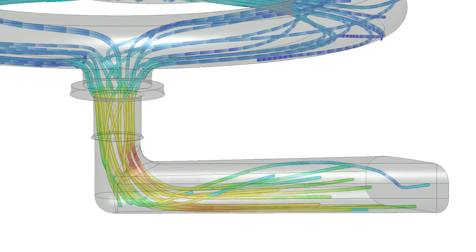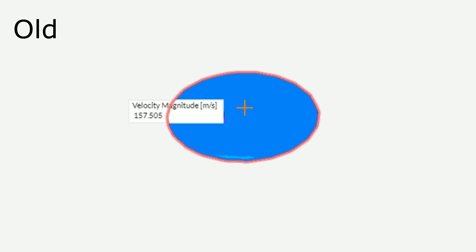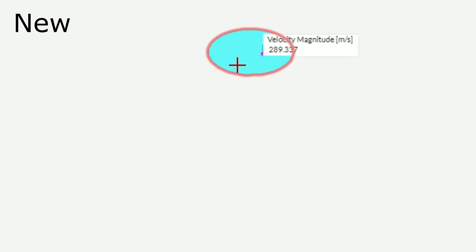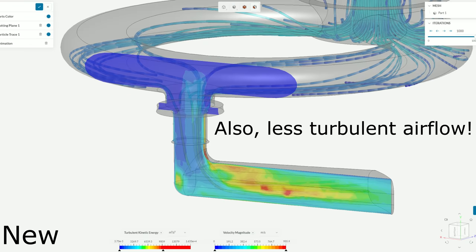Plus some actual valuable information. Straight to the important bit, I measured the intake velocity for both. Since they are the same diameter, this should tell me how much air is going through. And the new design had twice the velocity, so twice the air. That's a big improvement.